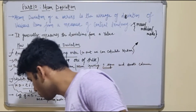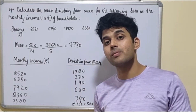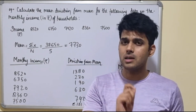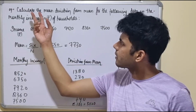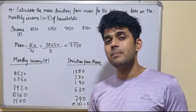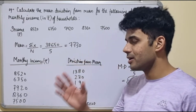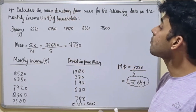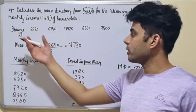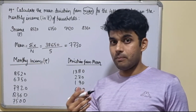Let me drop the example so I can explain. In this question, you need to calculate the mean deviation from mean for the following data on the monthly income of households: 8520, 6350, 7920, 9201, 6360, 7075, 7100 — five data sets. So you have to find mean deviation from mean.